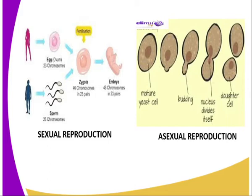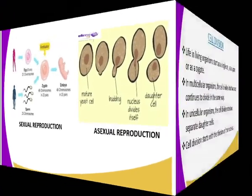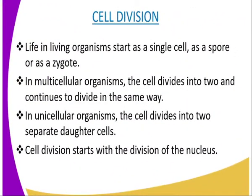Having introduced reproduction in plants and animals, we can now look at cell division, because cell division is what involves reproduction. Life in living organisms starts as a single cell, as a spore or as a zygote. In multicellular organisms the cell divides into two and continues to divide. In unicellular organisms such as the amoeba, the cell divides into two separate daughter cells.